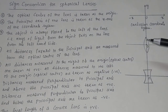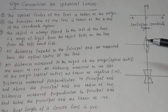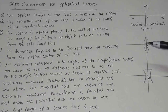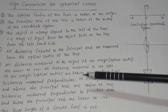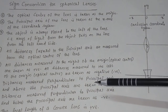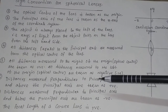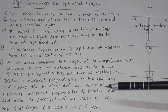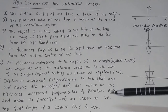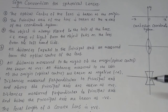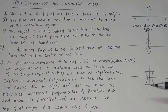Distances measured perpendicular to the principal axis and above the principal axis are taken as positive, just like the Cartesian coordinate system — that means the positive y-axis direction. Distances measured perpendicular to the principal axis and below the principal axis are taken as negative.